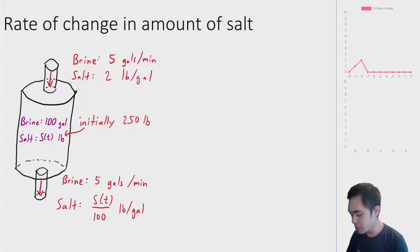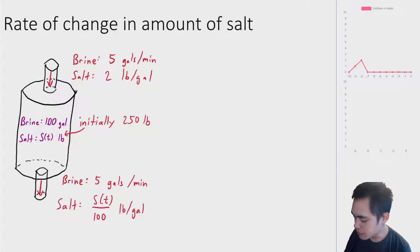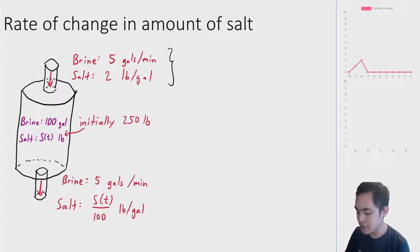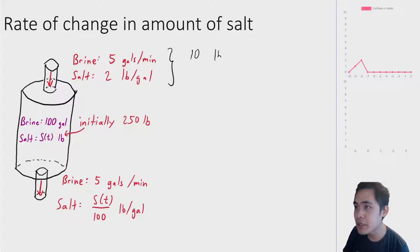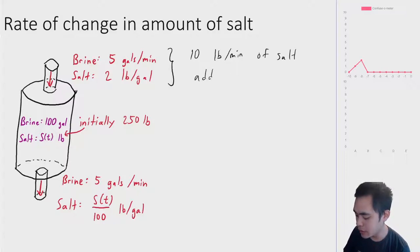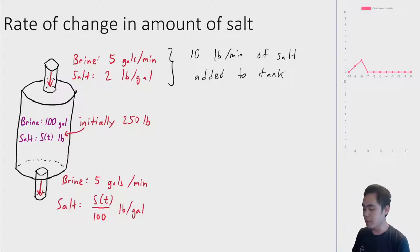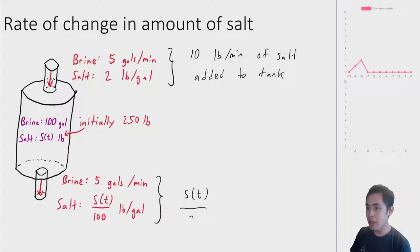Let's figure out how much salt is being added to the tank. We have 5 gallons per minute and 2 pounds per gallon, so multiplying those together gives us 10 pounds per minute of salt added to the tank. And how much salt is leaving the tank? We do the same thing, and you end up with S(T) divided by 20 pounds per minute of salt leaving the tank.